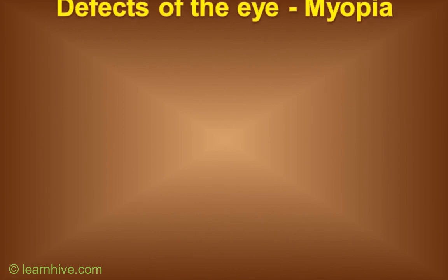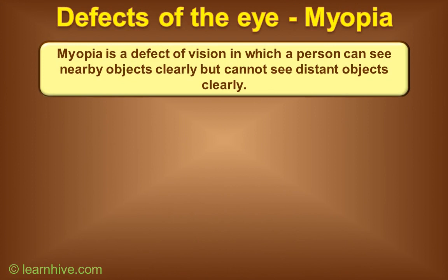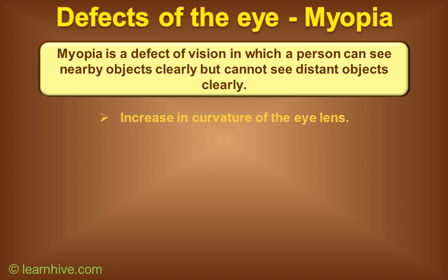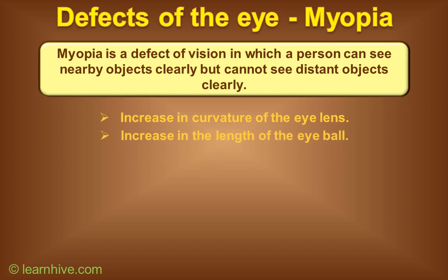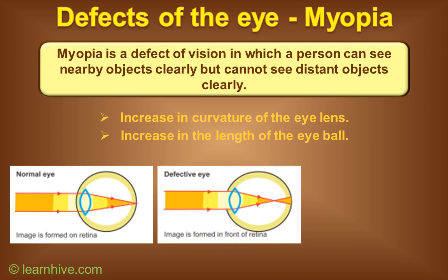Defects of the eye — myopia. Myopia is also known as short-sightedness. Myopia is a defect of vision in which a person can see nearby objects clearly but cannot see distant objects clearly. Myopia can arise due to the following reasons: 1. Increase in curvature of the eye lens. 2. Increase in the length of the eyeball. For a normal eye, the image of an object is always formed on the retina. But for a person suffering from myopia, the image is formed before the retina.